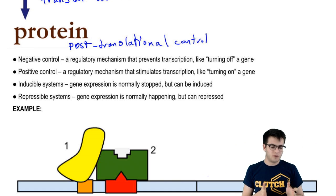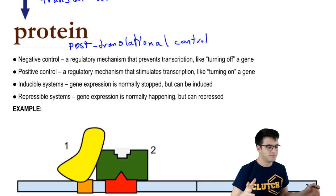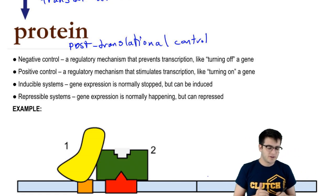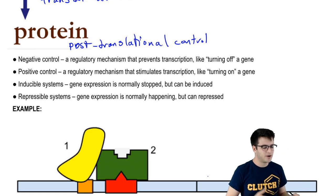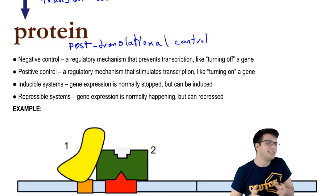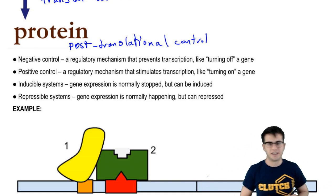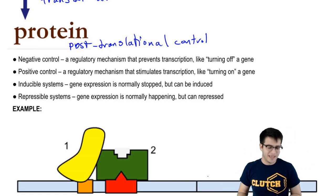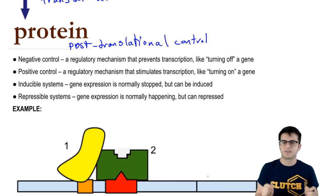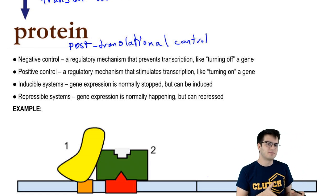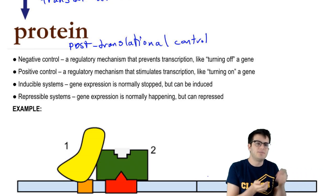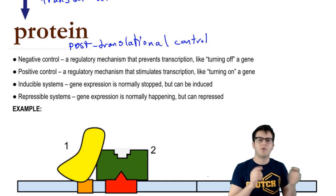Negative control refers to a regulatory mechanism that prevents transcription — it's like turning off a gene. Positive control is the opposite, where the regulatory mechanism actually stimulates transcription, like turning on a gene. Within negative and positive control, you have both inducible and repressible systems. Inducible systems are ones where gene expression is normally stopped, but expression of that gene can be induced — we can start expressing it when we need it.